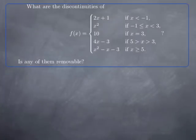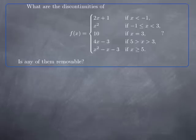Let's turn to a different exercise. The function f is defined piecewise by: 2x + 1 for x < -1; x² for -1 ≤ x < 3; f(3) = 10; 4x - 3 for 3 < x < 5; and x² - x - 3 for x ≥ 5. Again, we are looking for discontinuities and whether any of them are removable.